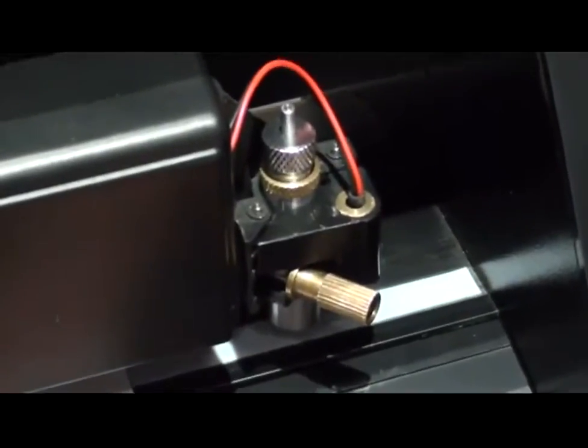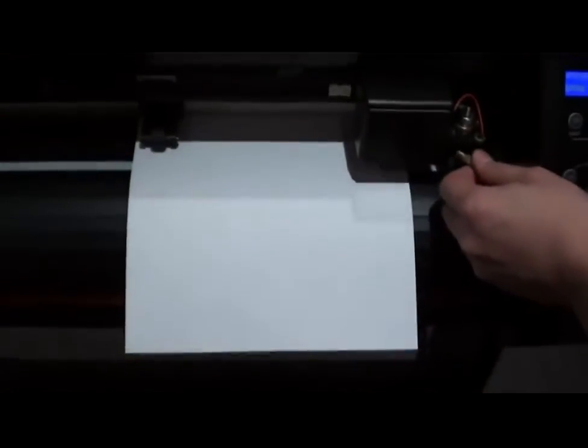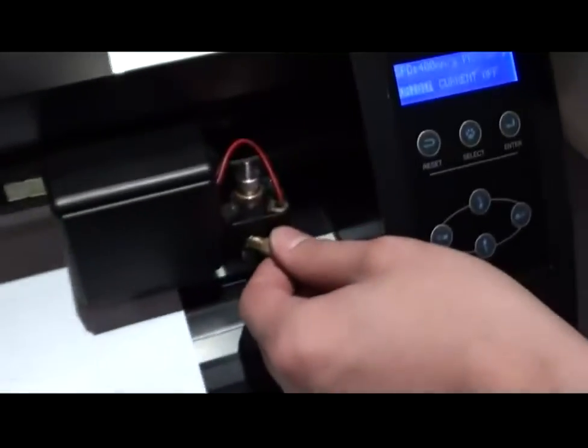To test the contour cutting offset, first load a piece of A4 paper onto the machine, then change the blade into a pen.